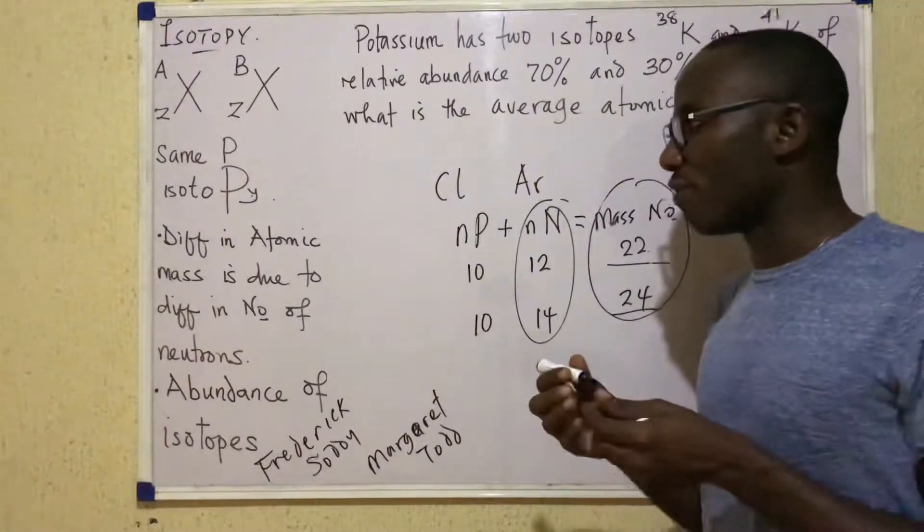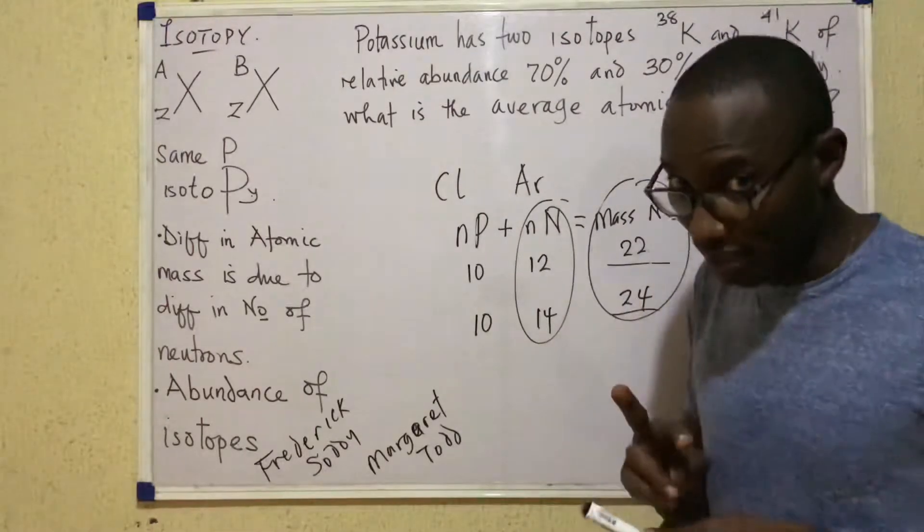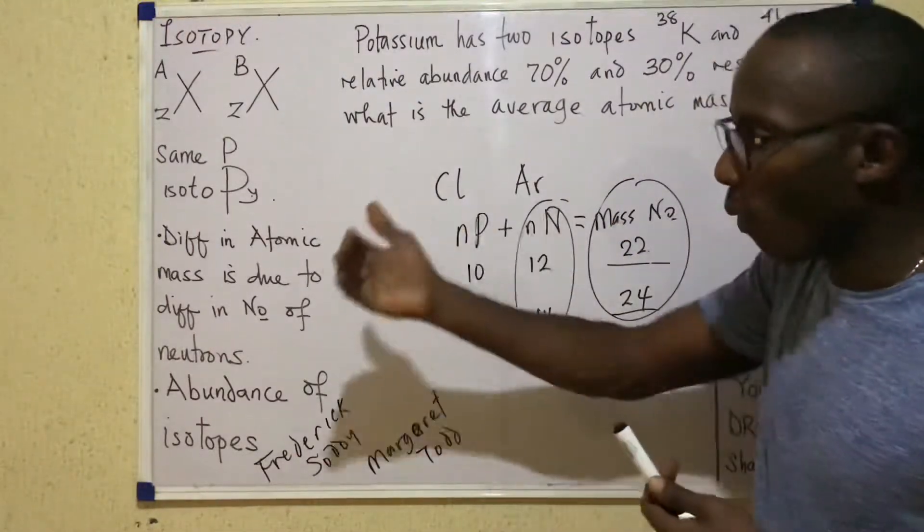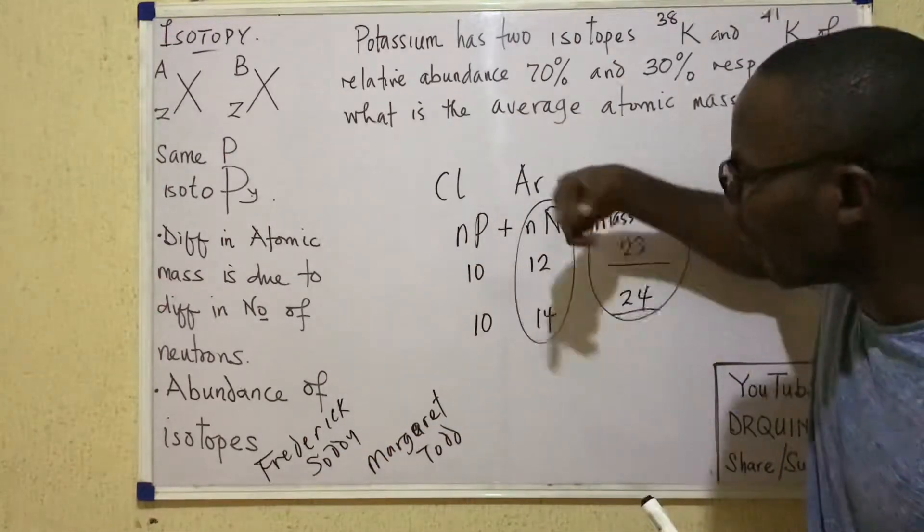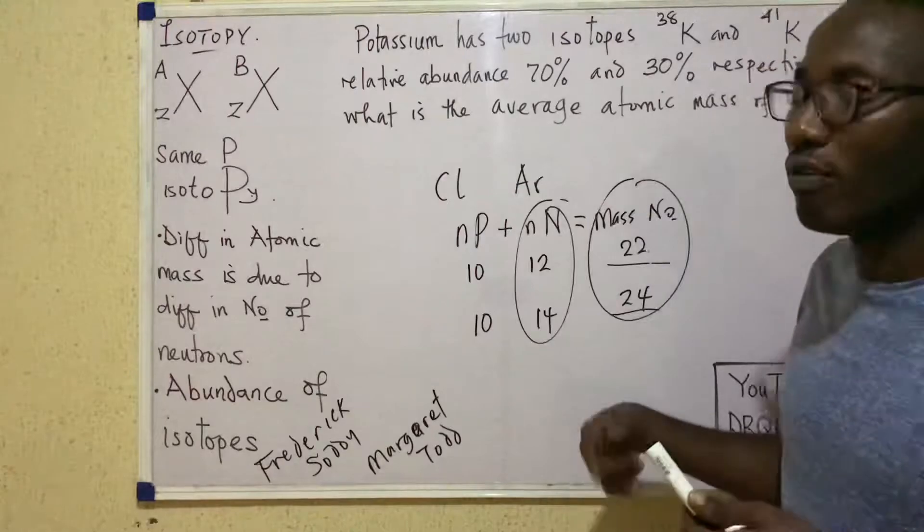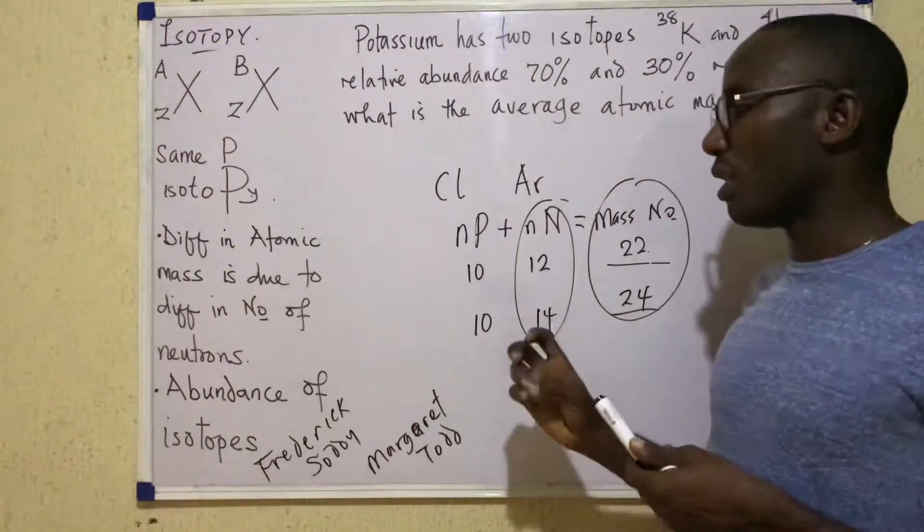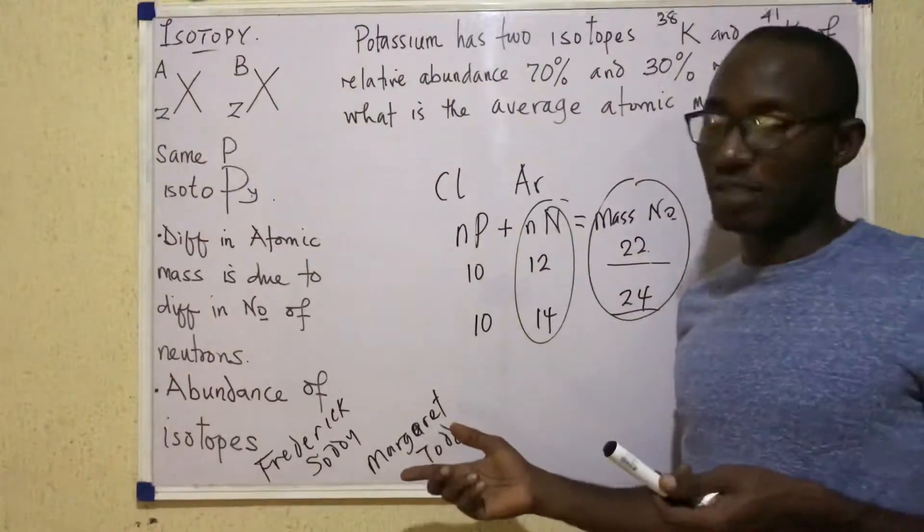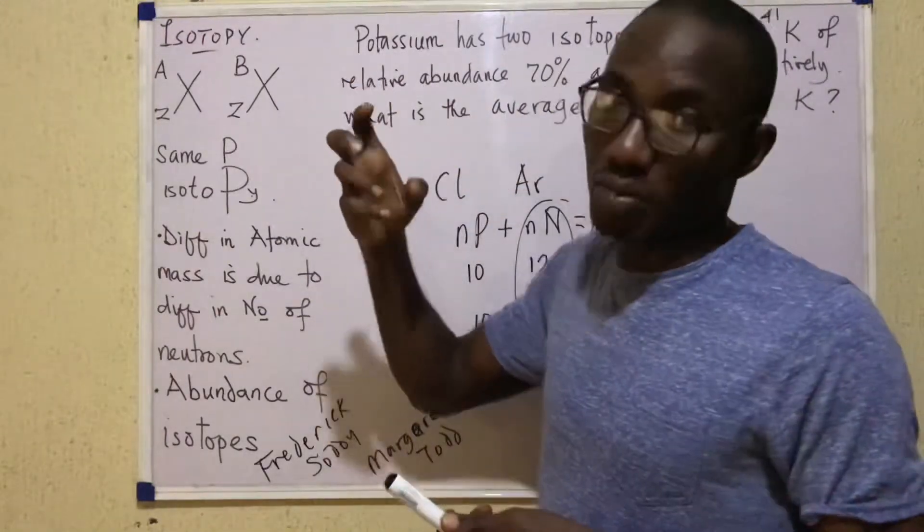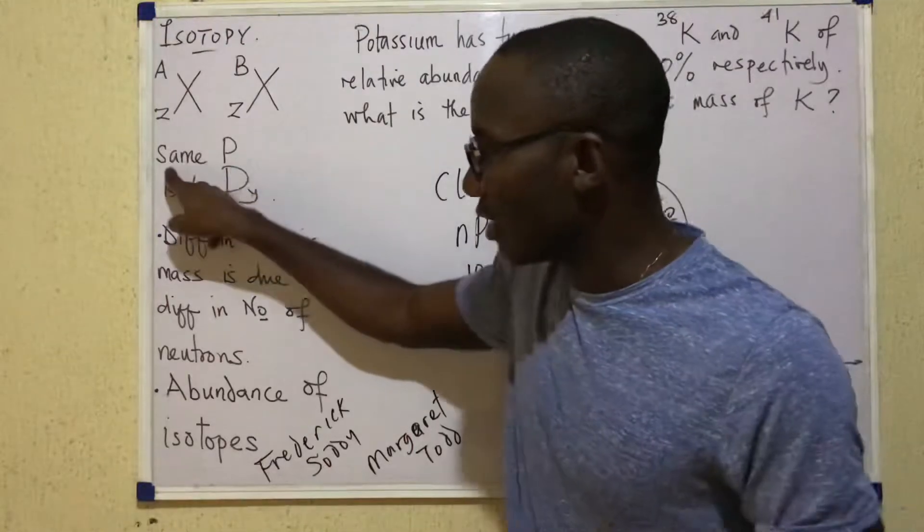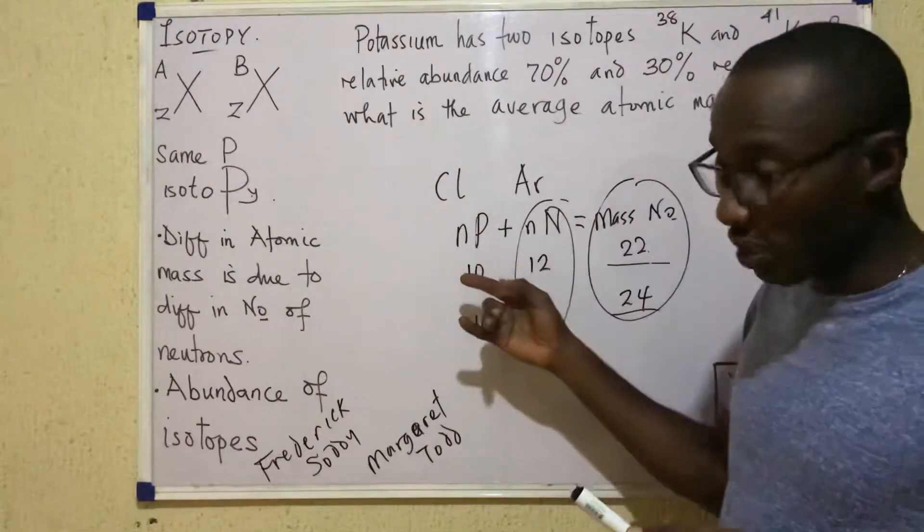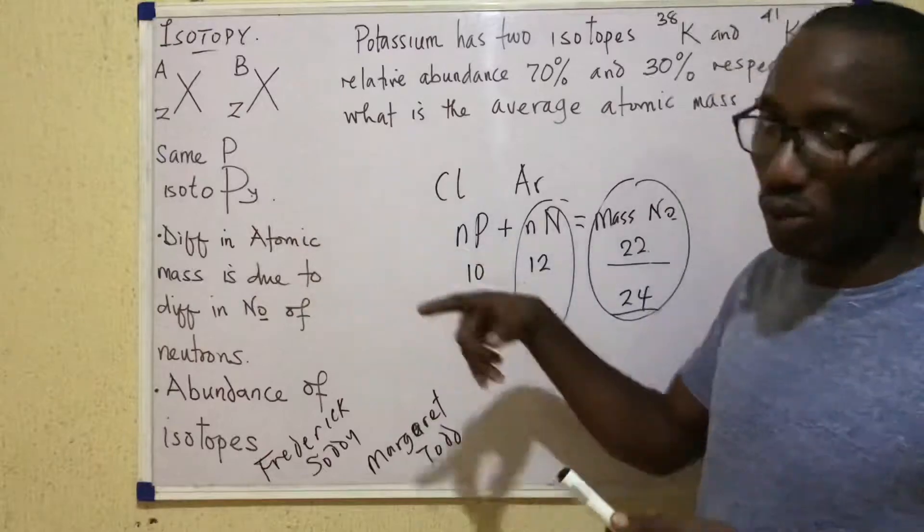So the difference in mass number is as a result of a difference in number of neutrons. That's why in some other texts, people define isotopy as the existence of two or more atoms having the same number of protons but different number of neutrons. So the similarity is in number of protons. So that's why I wrote here that an easy way to remember the meaning of isotopy is because the P are the same, the number of protons, then you have isotopy.